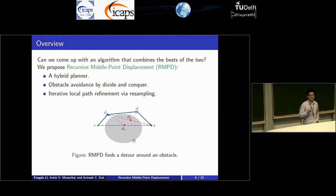So now the question is, can we come up with something that combines the best traits of the two categories? Our attempted answer to this question is the algorithm of recursive midpoint displacement. It's a hybrid planner that does obstacle avoidance by doing divide and conquer, and iteratively updates the quality of the path using a resampling strategy.